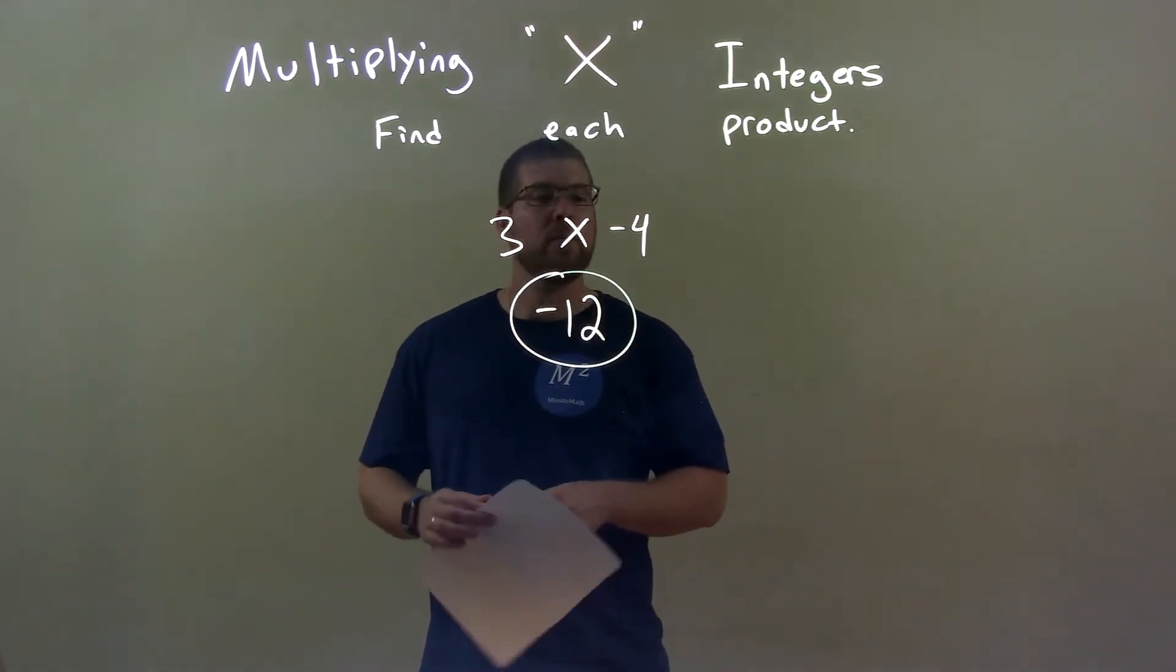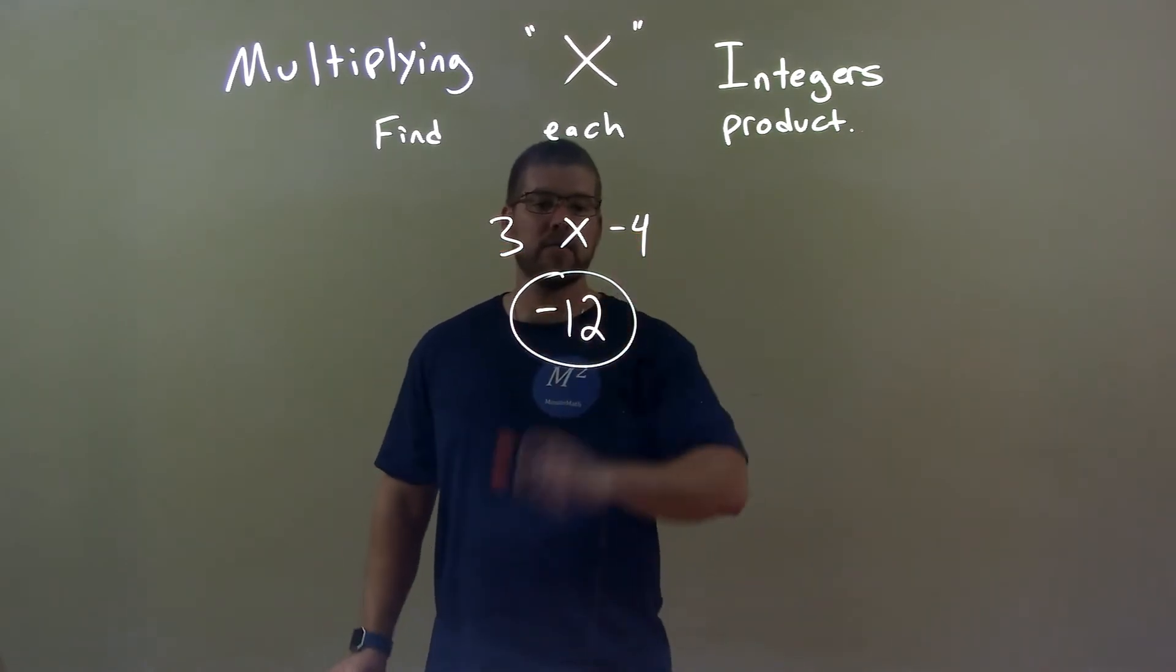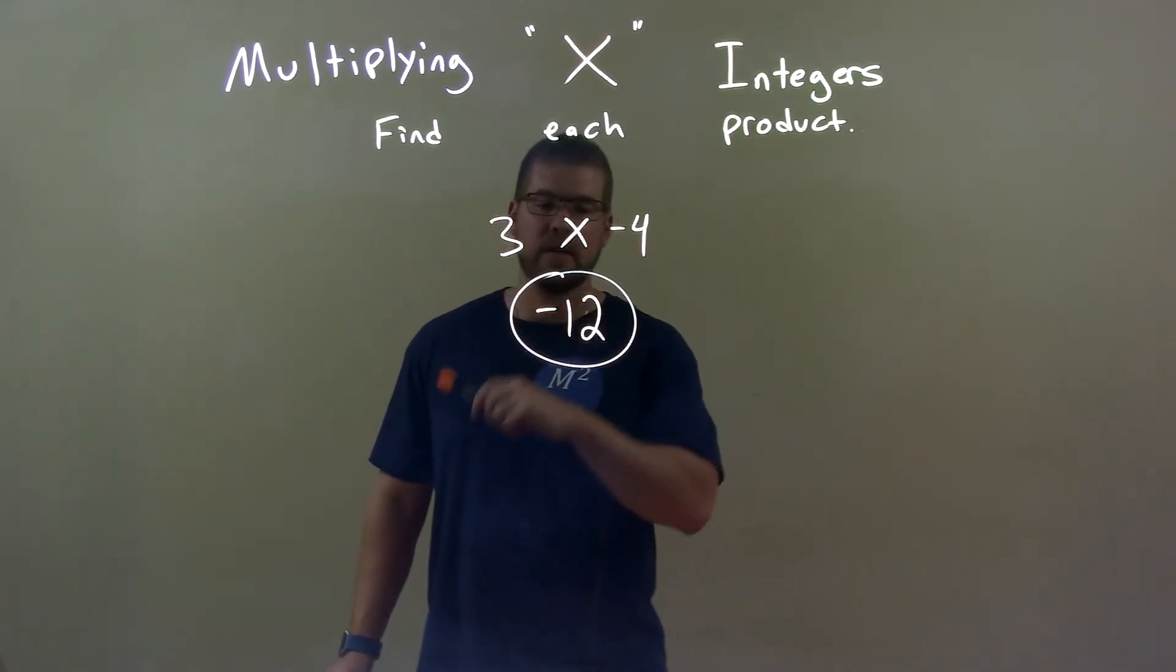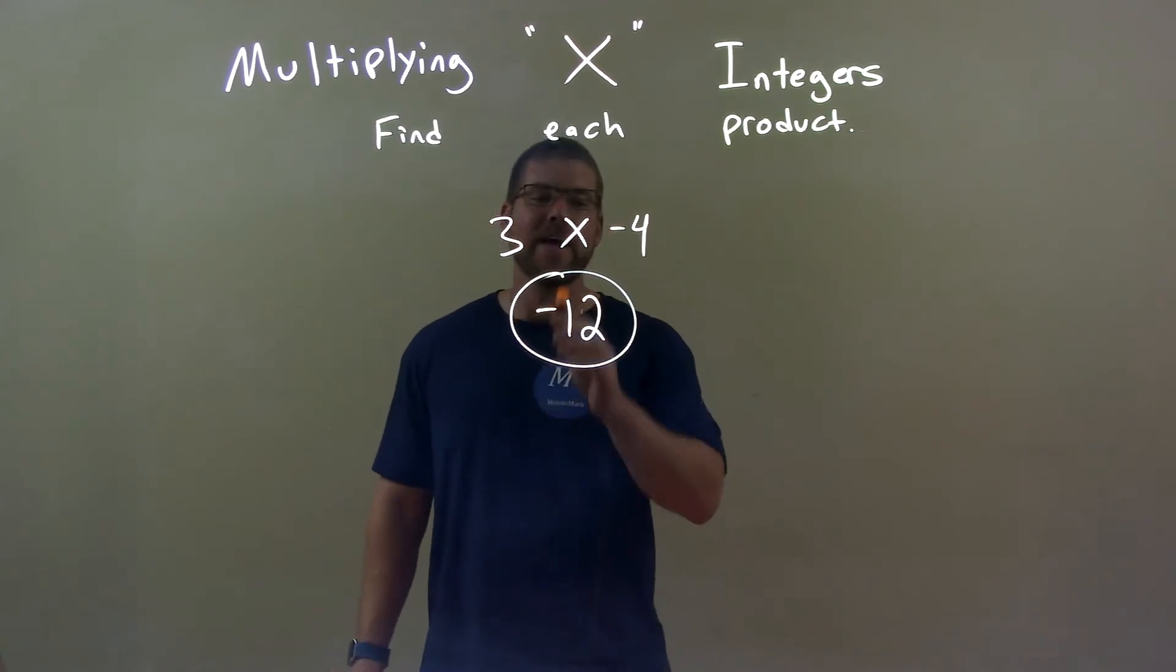Quick recap: we're given 3 times negative 4. Well, 3 times positive 4 is 12, and a positive times a negative is negative. So again, final answer, negative 12.